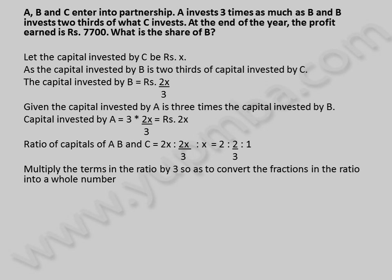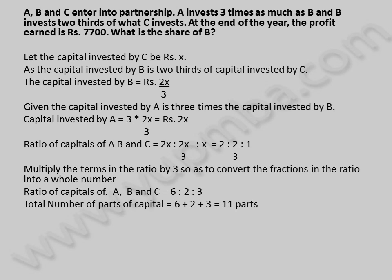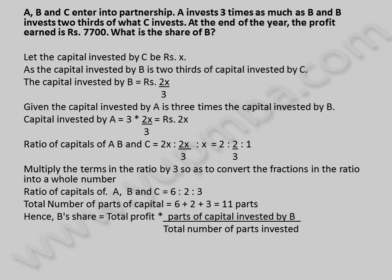Multiply the terms in the ratio by 3 so as to convert the fractions into whole numbers. Ratio of capitals of A, B, and C is equal to 6 : 2 : 3. Total number of parts of capital is equal to 6 plus 2 plus 3, which equals 11 parts. Hence, B's share is equal to total profit multiplied by parts of capital invested by B divided by total number of parts, which equals 7,700 into 2 by 11 rupees, giving 1,400 rupees. The share of B is 1,400 rupees.